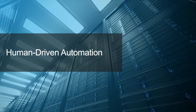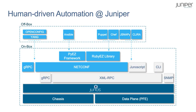Thanks for that overview of the evolution of automation. Now we're going to continue on to talk about the first step of that, which is human-driven automation. Before we really dive into automation at Juniper, I think it's helpful to step back and just take a look at some of the tools and concepts involved. What we have here is a very simple logical overview of some of the different layers and abstractions that are involved.